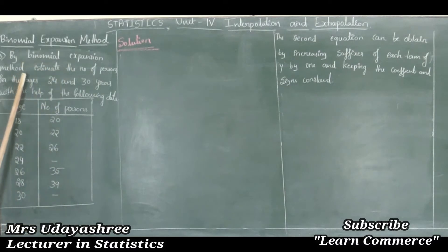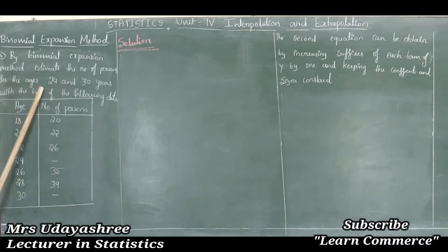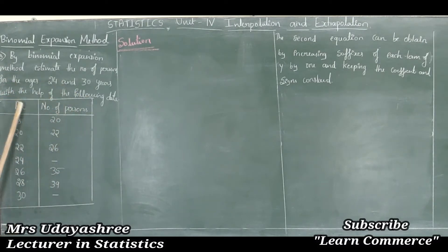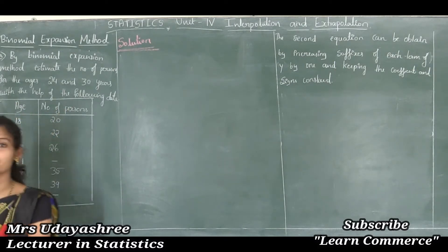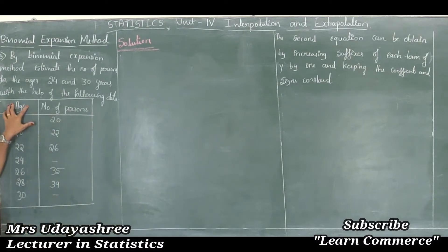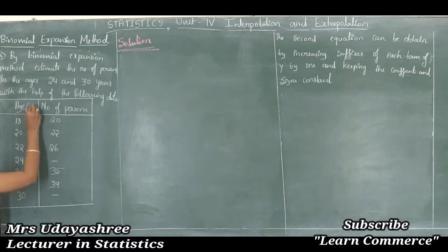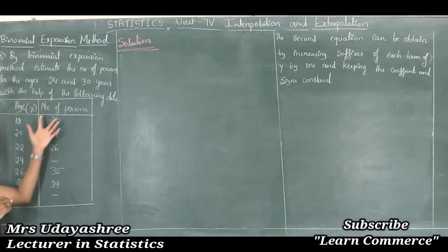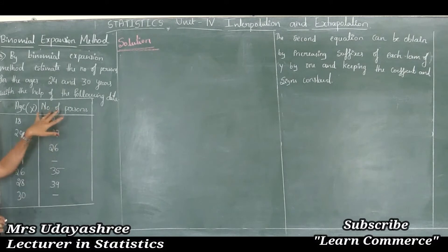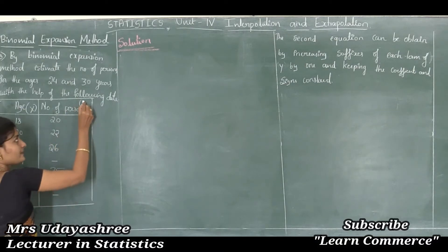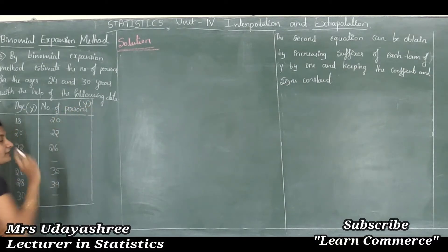By binomial expansion method, estimate the number of persons for ages 24 and 30 years with the help of the following data. Ages are the independent variable and number of persons are the dependent variable. The independent variable is denoted by x, so here x is the age. The dependent variable is denoted by y, so here y is the number of persons.